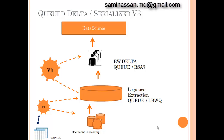Next comes Queue Delta. In this method, the V1 update writes data to an extraction queue instead of writing directly to the Delta Queue. The advantage here is that V1 can update up to 10,000 delta records in a single LUW, utilizing bulk load features of the underlying database. The extraction queue can be maintained via transaction LBWQ. A V3 run should be scheduled at regular intervals, preferably every hour, to transfer the contents of the extraction queue to the BW Delta Queue. Hence this method is also called Serialized V3.